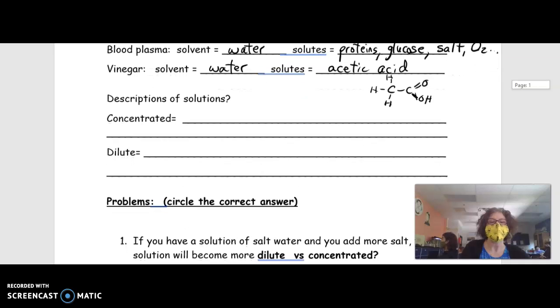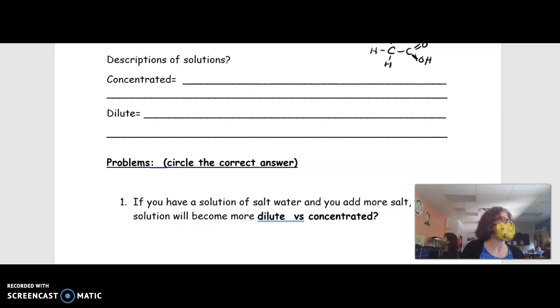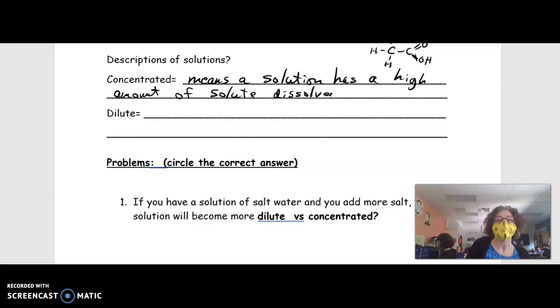I'm going to go down to descriptions of solutions now. What does the word concentrated mean? Concentrated means a solution has a high amount of solute dissolved in it. So when you have concentrated orange juice, you know that there's lots of orangey flavor in there.